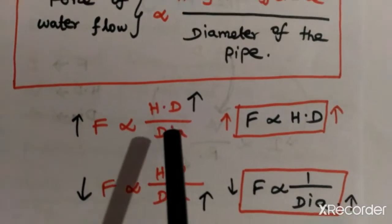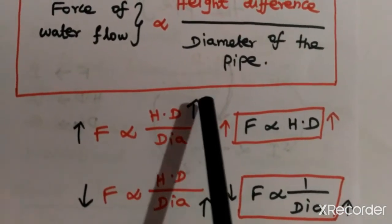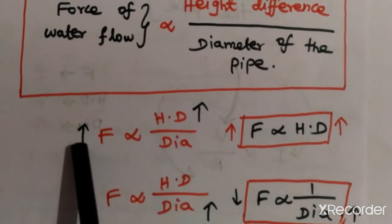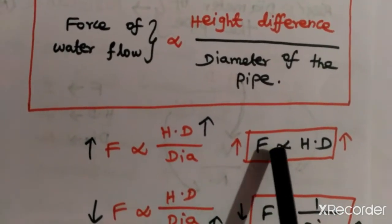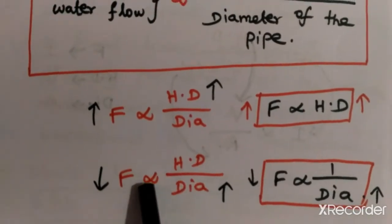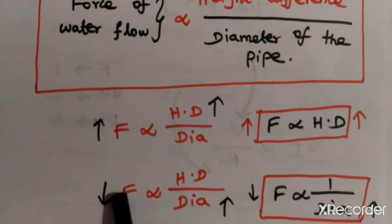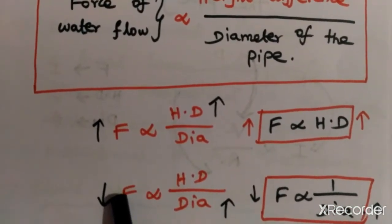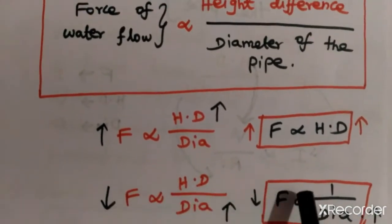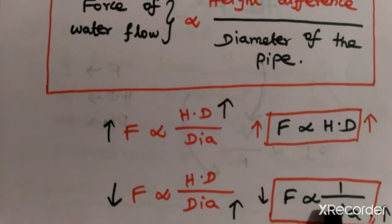So the combined equation is: force F is directly proportional to height difference divided by diameter. If we increase the height difference, the force increases — force is directly proportional to height difference. If the diameter is increased, the force decreases, and vice versa — so force is inversely proportional to the diameter of the pipe.